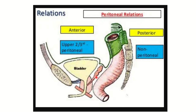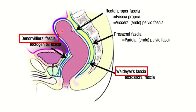Anteriorly to the rectum are structures such as the seminal vesicle, prostate, and bladder. Behind the rectum there is a fascia — the connective tissue — this is Waldeyer's fascia or rectosacral fascia. Anteriorly there is the rectogenital fascia, also known as Denonvilliers' fascia. During anterior mobilization, Denonvilliers' fascia may be damaged, but posteriorly Waldeyer's fascia is preserved.